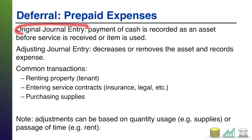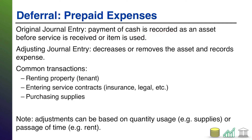In the case of a prepaid, the original journal entry is when you pay the cash, and that payment gets recorded as an asset because someone owes you something for that cash. So that journal entry tends to look like this: prepaid expense, debit — that is an asset — and cash out. So cash is going out, but someone now owes you something in exchange for that money.